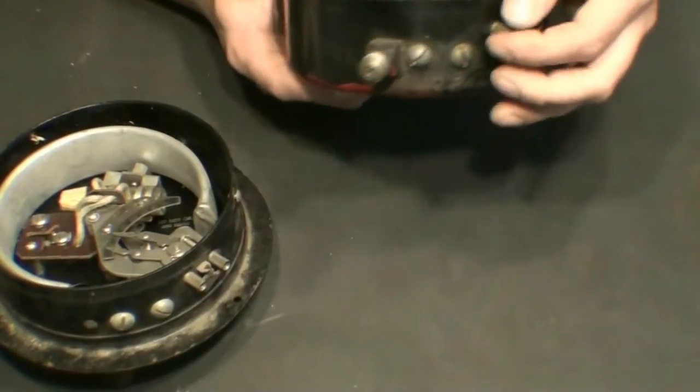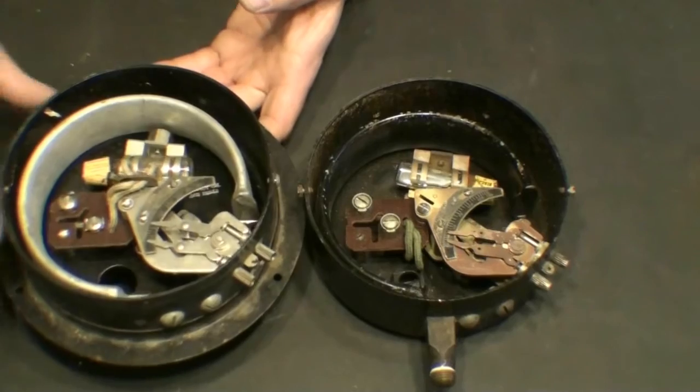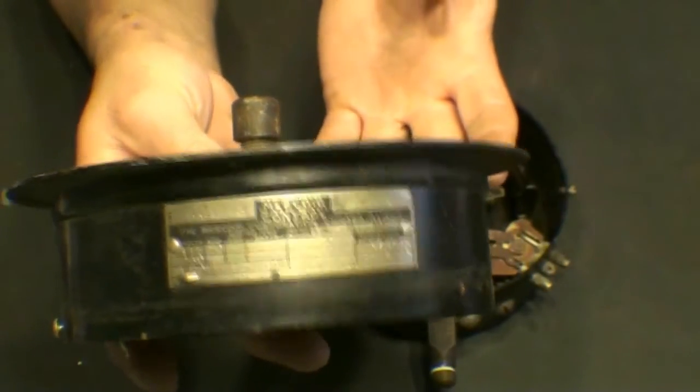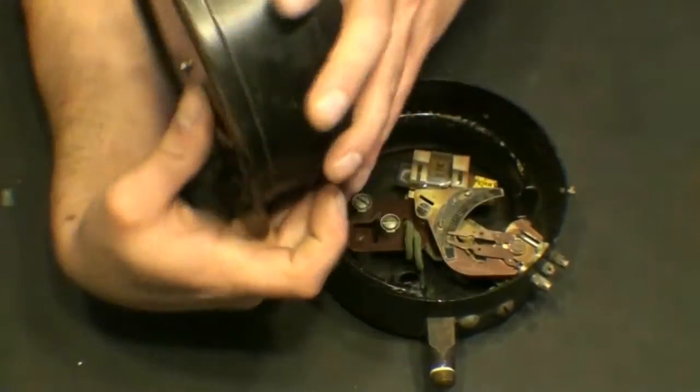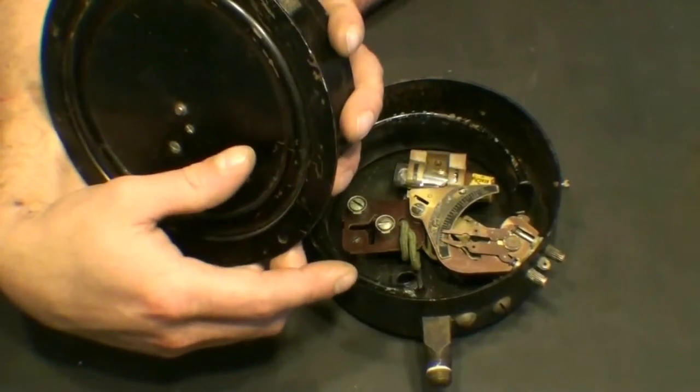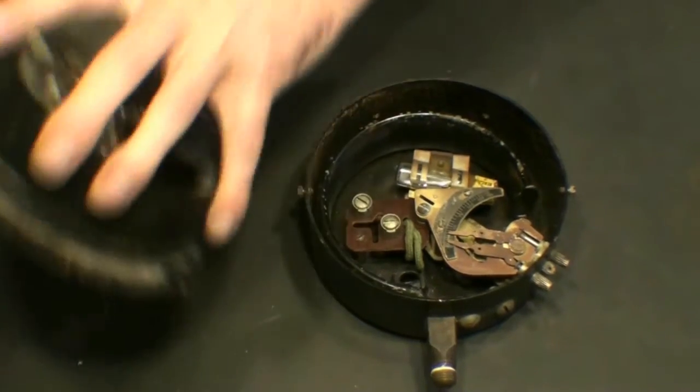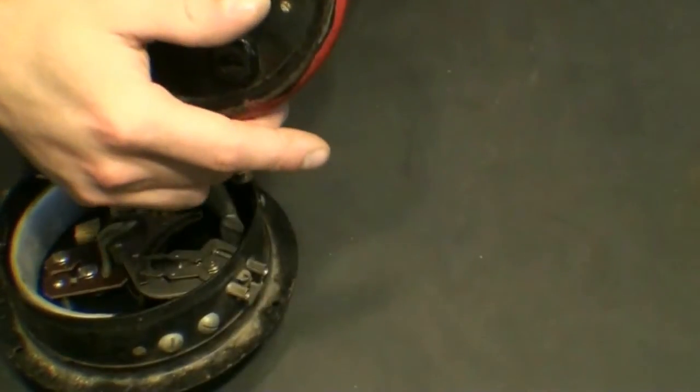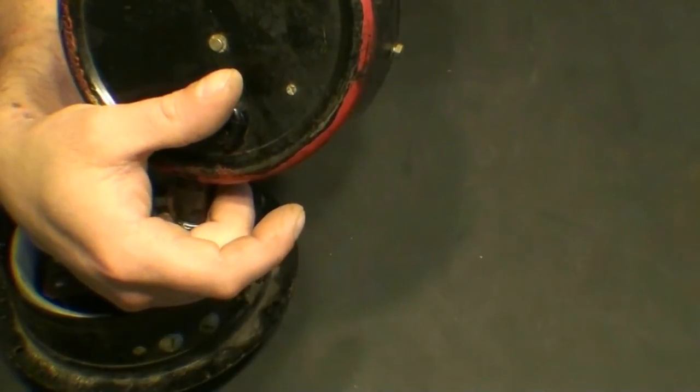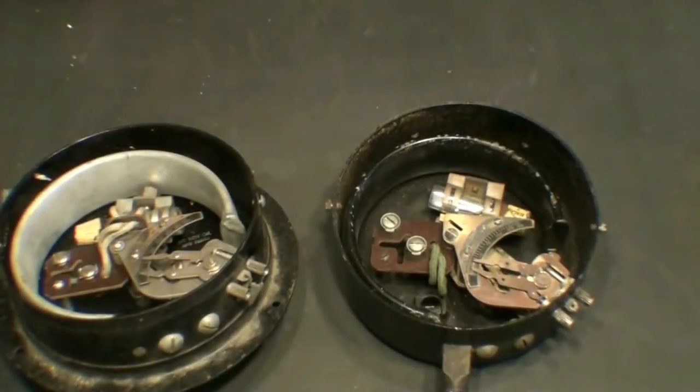But anyway, there we have it, mercury pressure switches. You can see there's the rating tag. It says it is rated 115 volt 10 amp, 230 volt 5 amp, single pole single throw switch, single phase, half horsepower rating, and DC half horsepower.